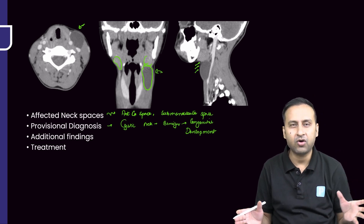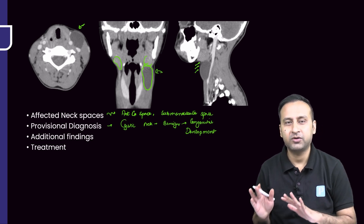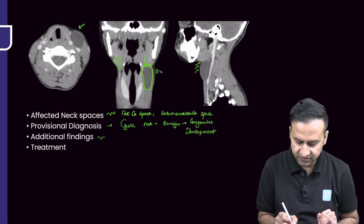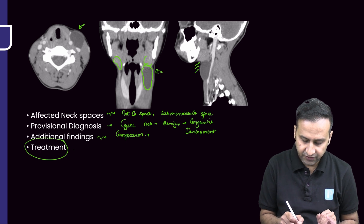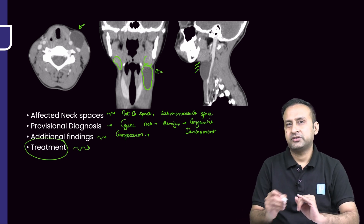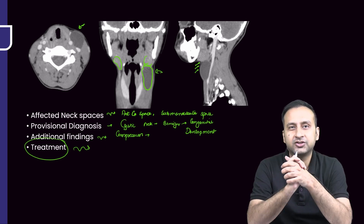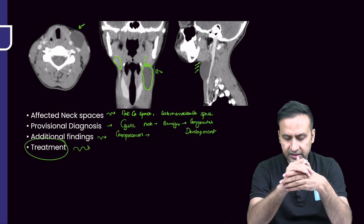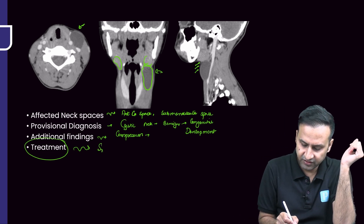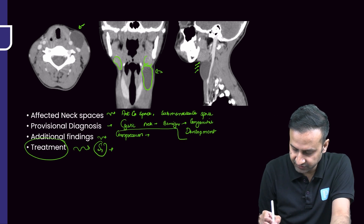I don't see any solid component, and I don't see any fat either. The presence of fat is very important because whenever you see fat you think about a dermoid cyst. The only additional finding is compression over the vessels; apart from that nothing significant. Treatment is surgical — there is no conservative treatment. For congenital or developmental cysts, which often have deeper extension, the surgery may involve marsupialization or something similar.